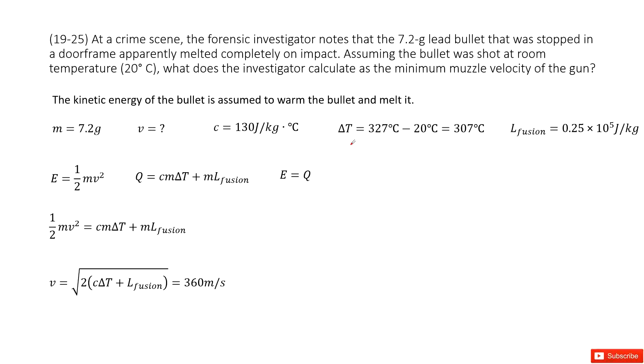Chapter 19 is about heat and the first law of thermodynamics. In this case we have a lead bullet. The mass is given and we don't know its initial velocity, but finally it stops on the door.